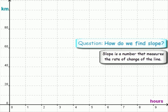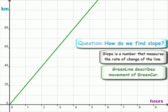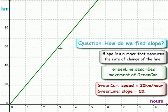Let's look again at green line and green car. Remember, this line described the movement of green car, which every hour went 20 kilometers. So green car is going at 20 kilometers per hour.